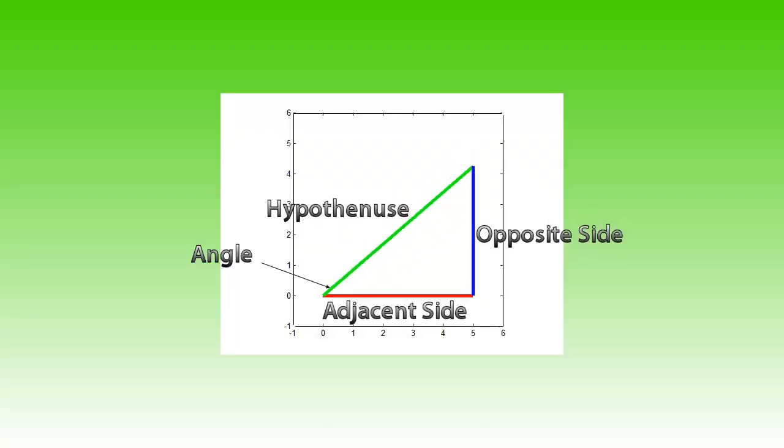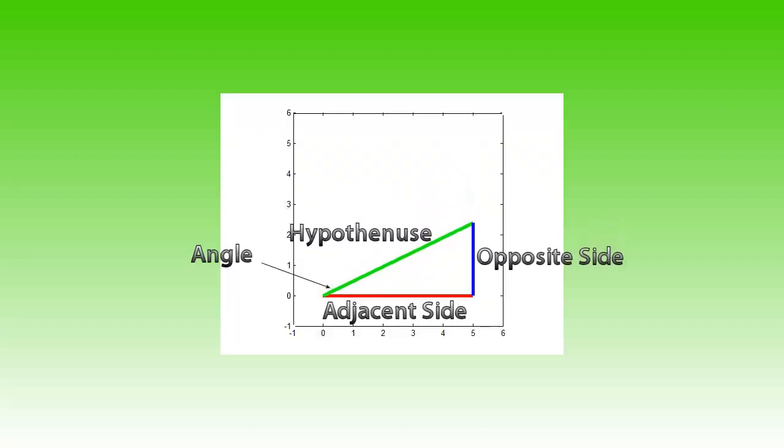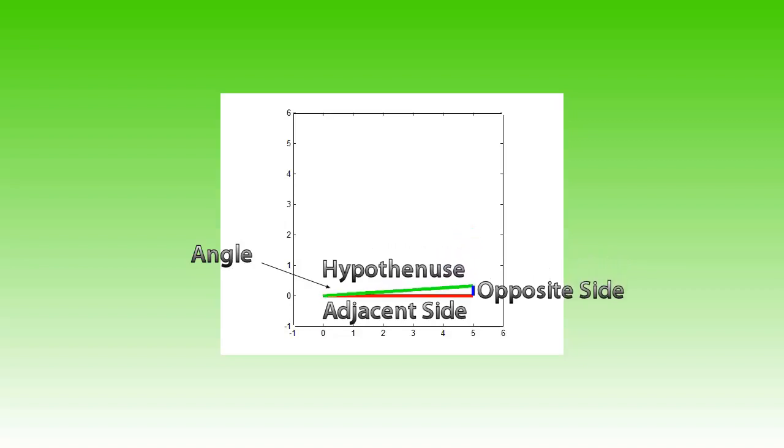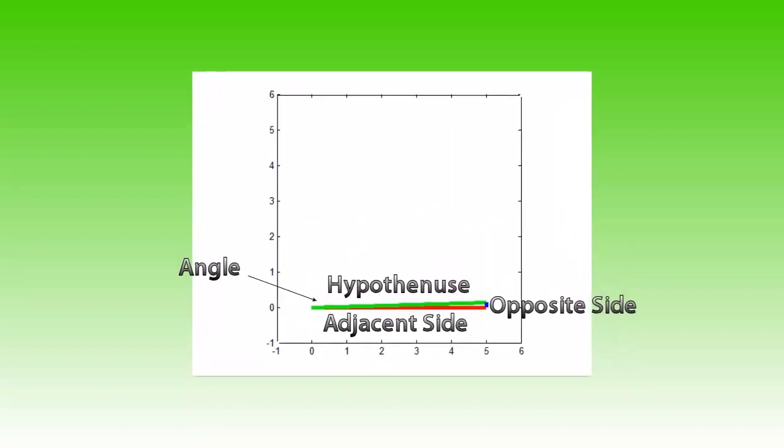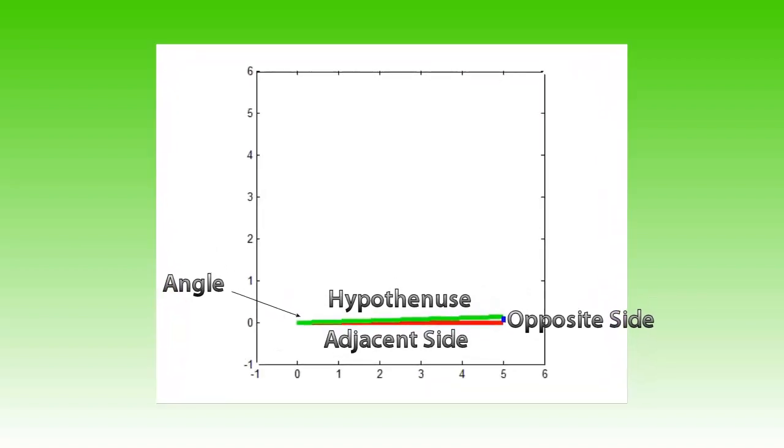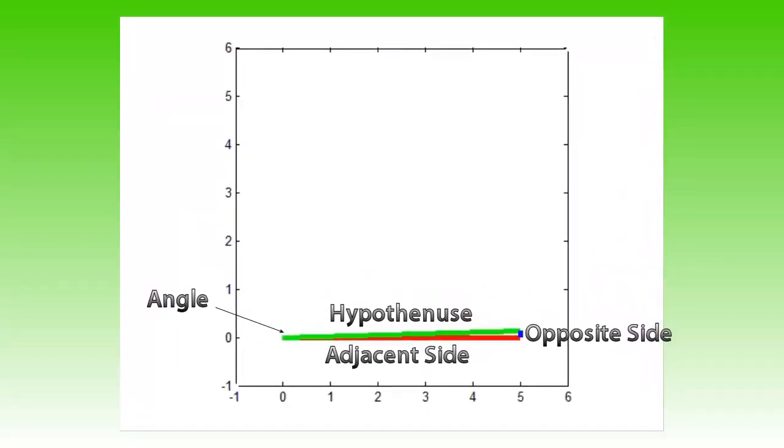Since I don't like to just learn things by heart, I will give you a method of deriving these definitions. Imagine we have a triangle with an angle of nearly zero degrees. We can easily see that the x component, the adjacent side, becomes the same length as the hypotenuse.